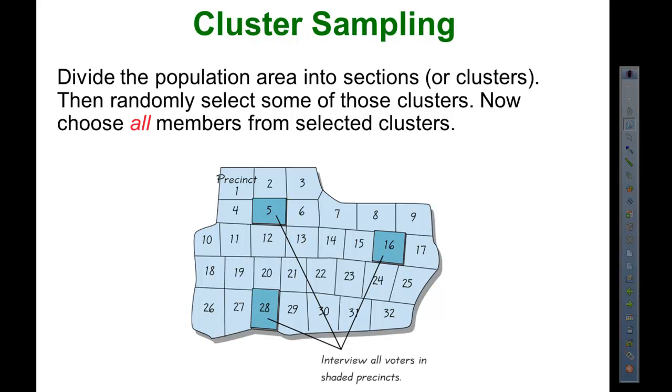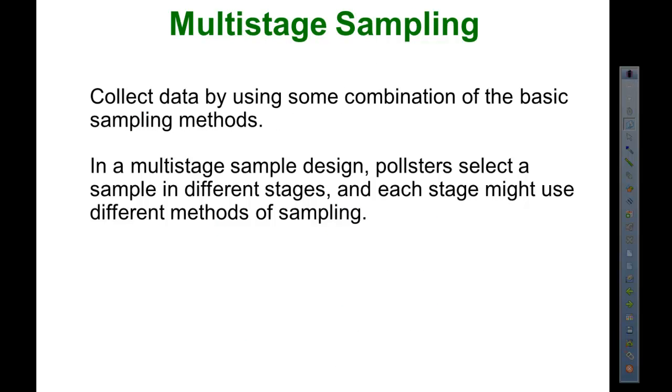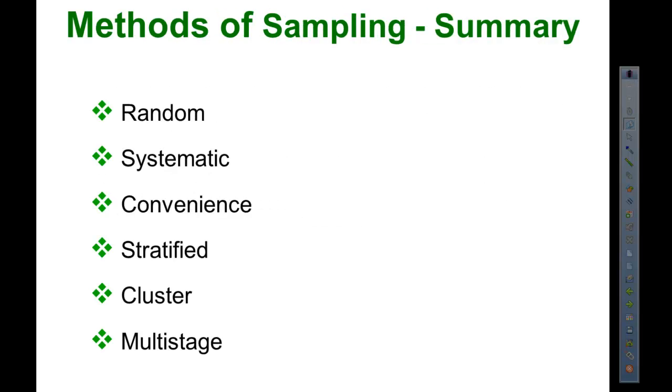Stratified versus cluster. Those are easily confused, but we're going to talk about it. And then multi-stage sampling. Not a lot you really need to know about this except that in a practical sense, often when we survey or sample data, we use more than one of these things. At one stage we use this and then from there we go. You might start out with some random selection and then some cluster sampling or whatever. Collect data by using some combination of the basic sampling methods. That's all you need to know. These are our methods of sampling. We've got some examples in our handout.